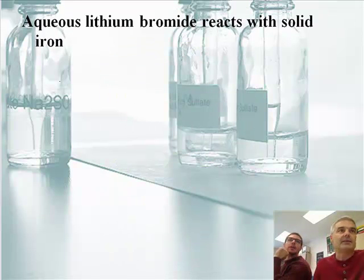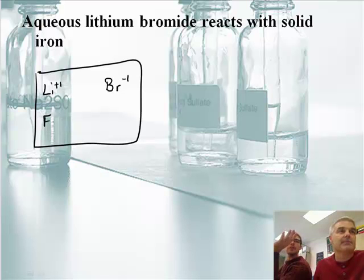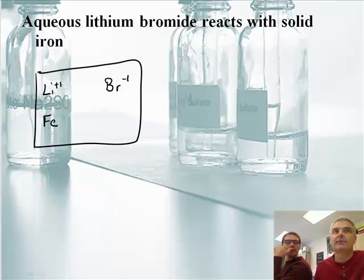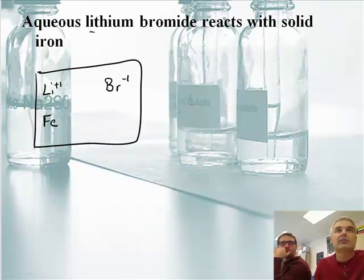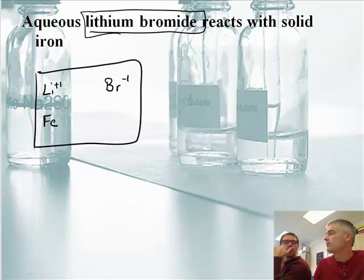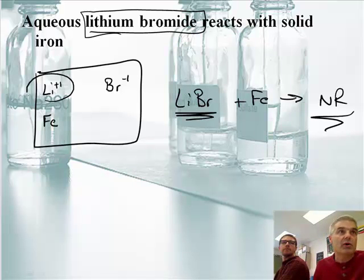Next: aqueous lithium bromide. Let's make a scratch pad box. Lithium has a charge of plus one from the periodic table; bromide is negative one. The reason lithium has a charge is because it's in an ionic compound — solid iron has no charge. Now, lithium is like the hottest guy on the activity series — lithium always gets the girl. Lithium bromide: lithium already has the girl. No reaction. You could write LiBr + Fe, but the answer is no reaction, because he already has the girl and he keeps her.